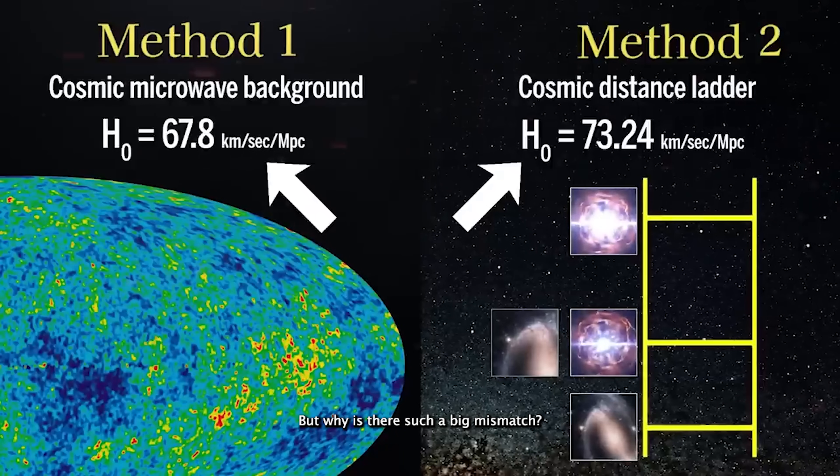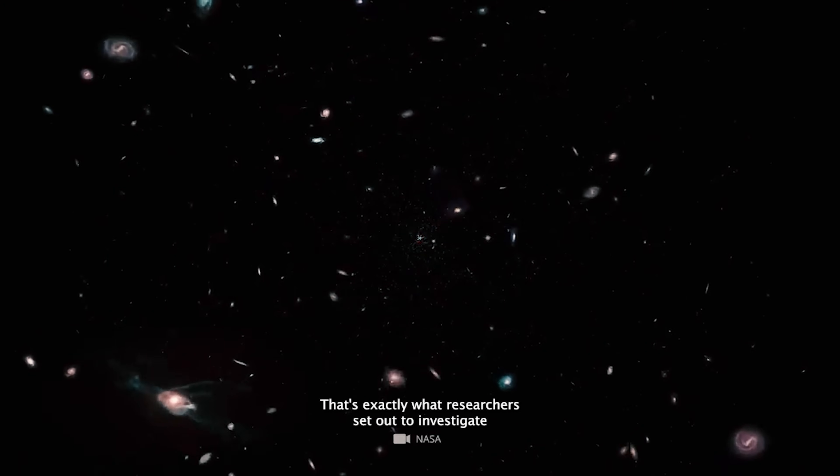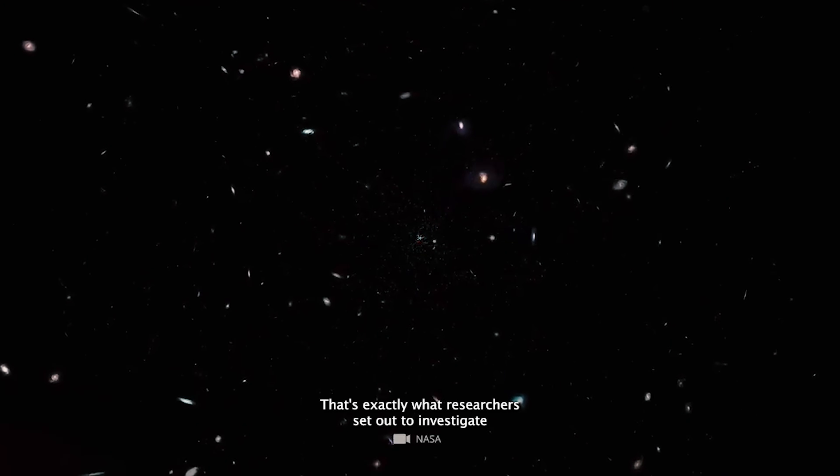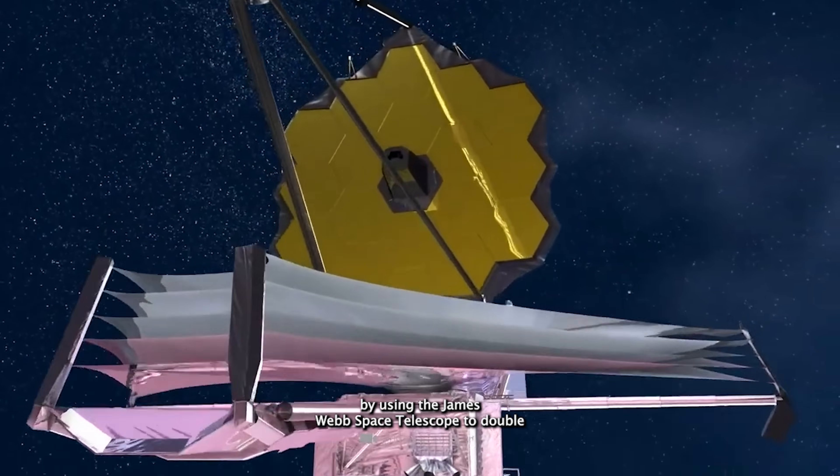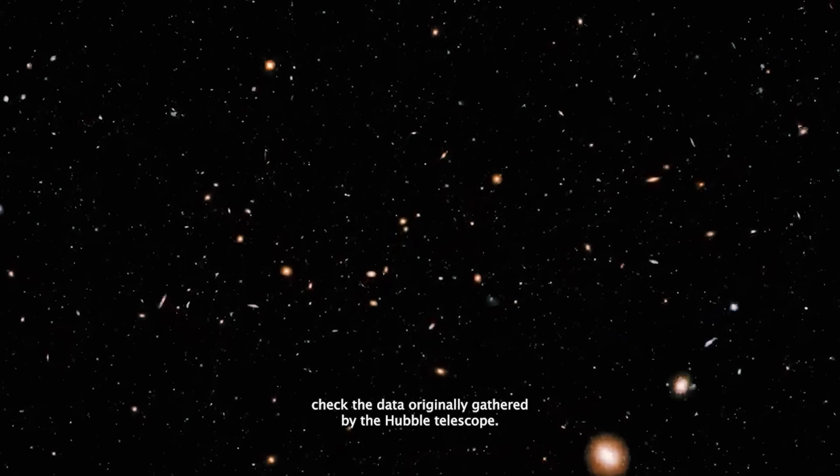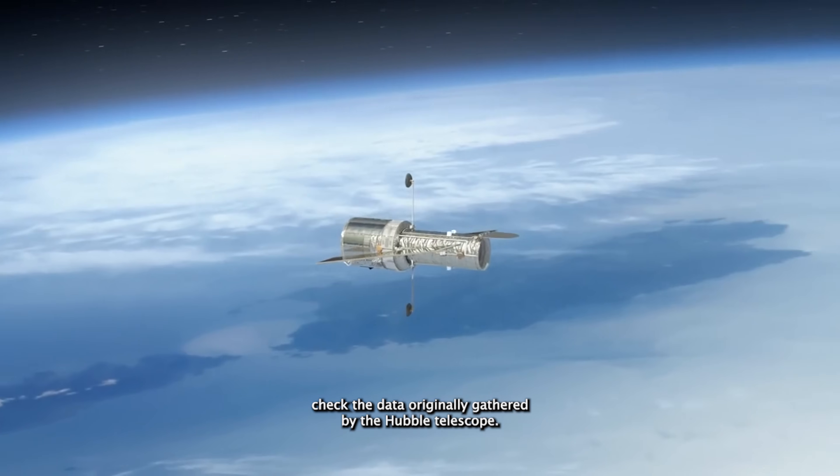But why is there such a big mismatch? Could it simply be a case of flawed measurements throwing off the numbers? That's exactly what researchers set out to investigate by using the James Webb Space Telescope to double-check the data originally gathered by the Hubble Telescope.